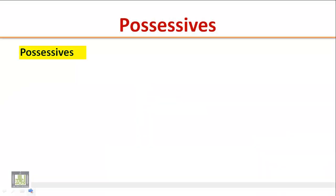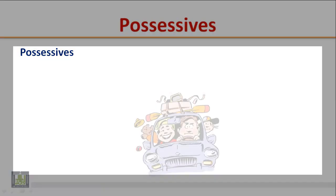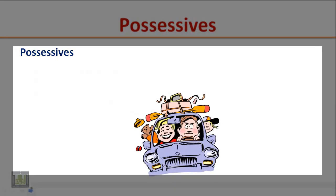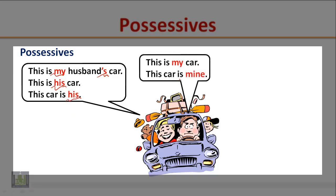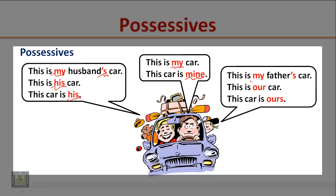Possessives. Look at the following picture and pay attention to the possessives. This is my husband's car. This is his car. This car is his. This is my car. This car is mine. This is my father's car. This is our car. This car is ours.